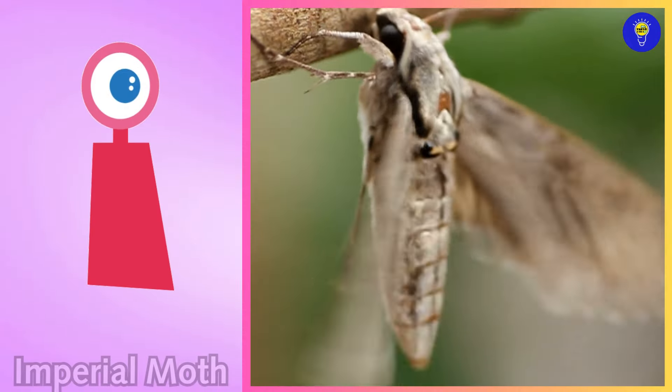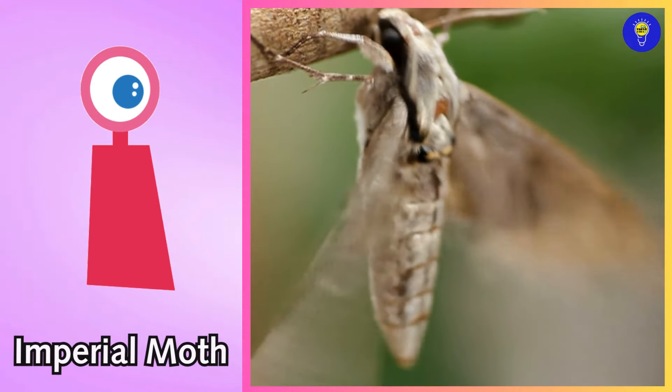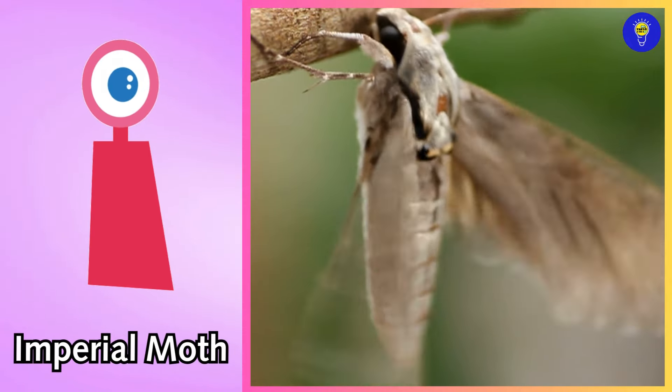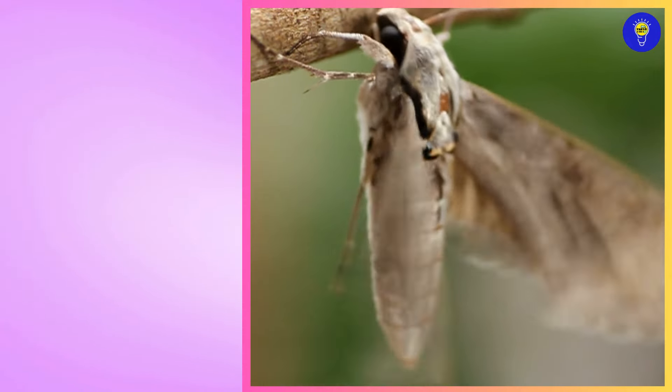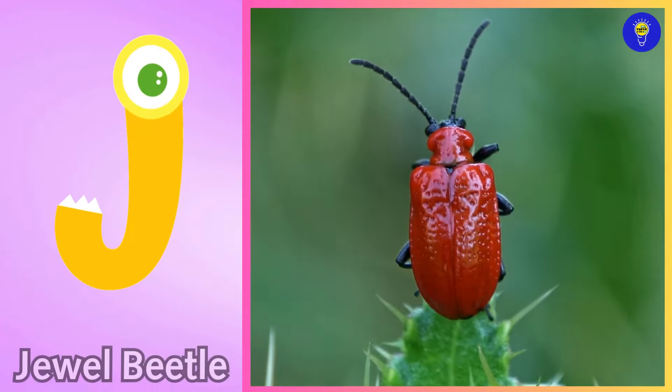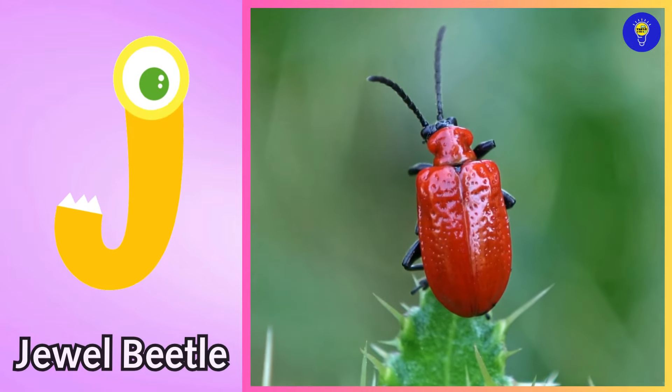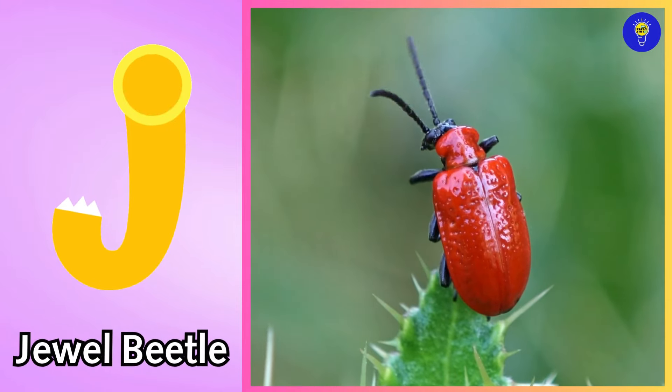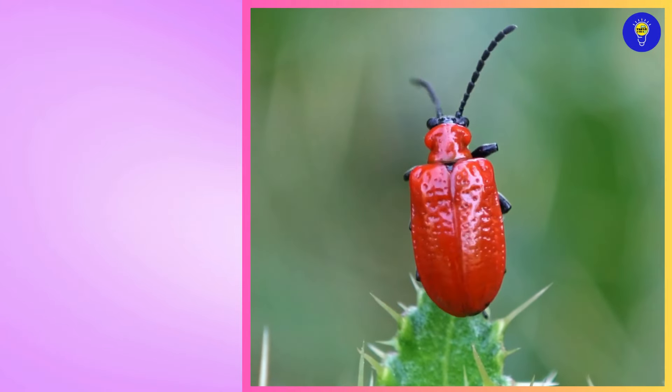I is for imperial moth. i, imperial moth. J is for jewel beetle. j, jewel beetle.